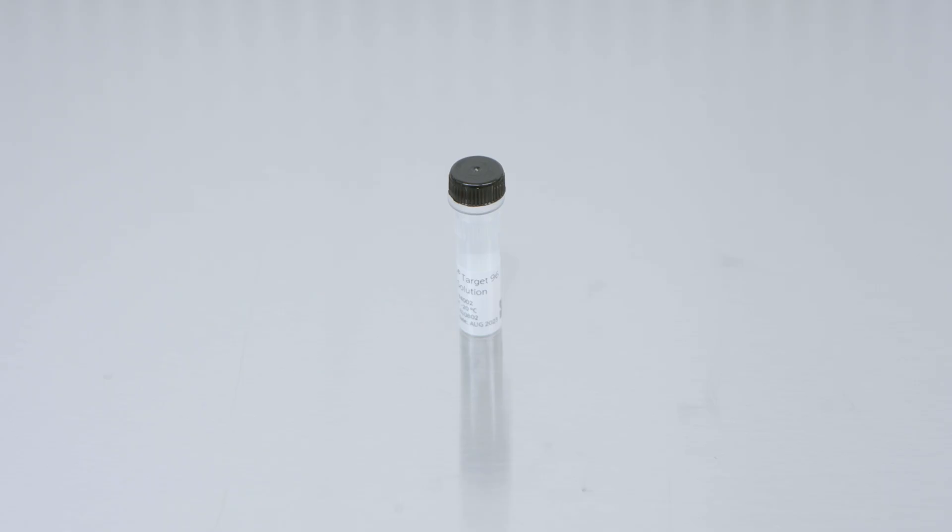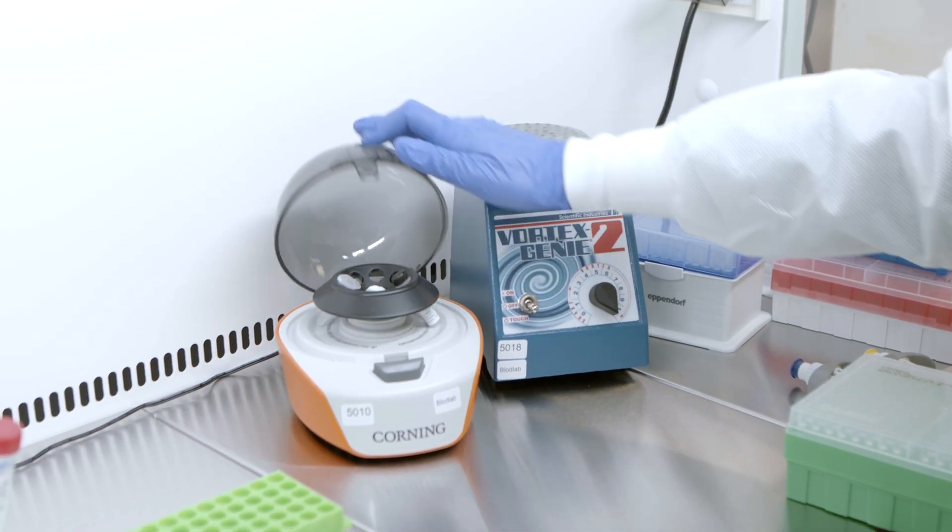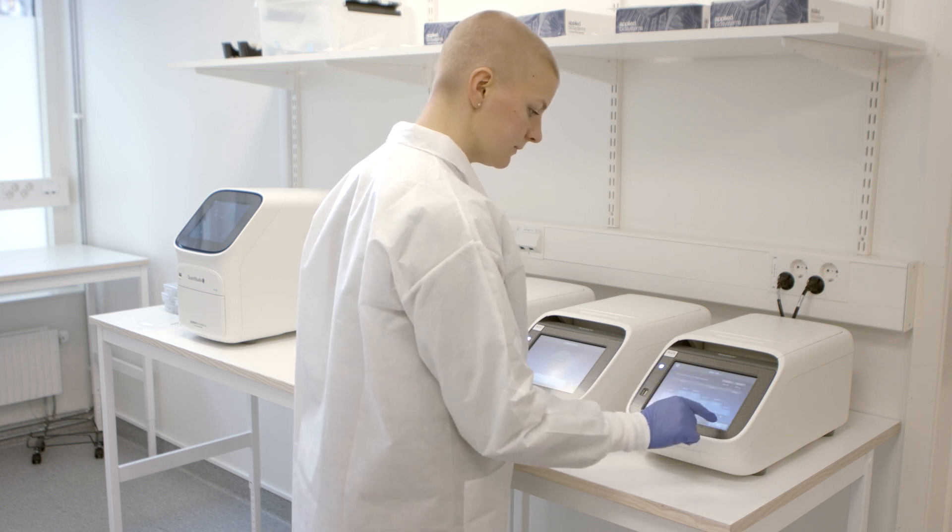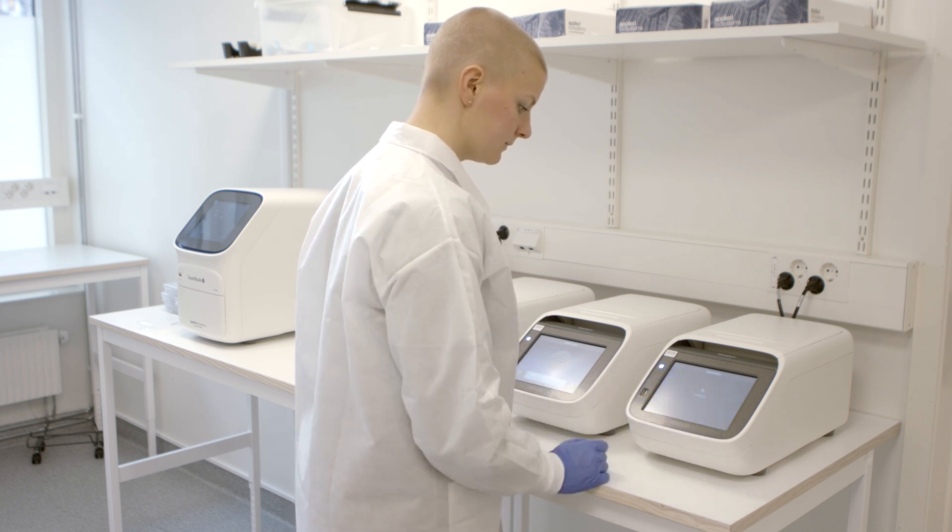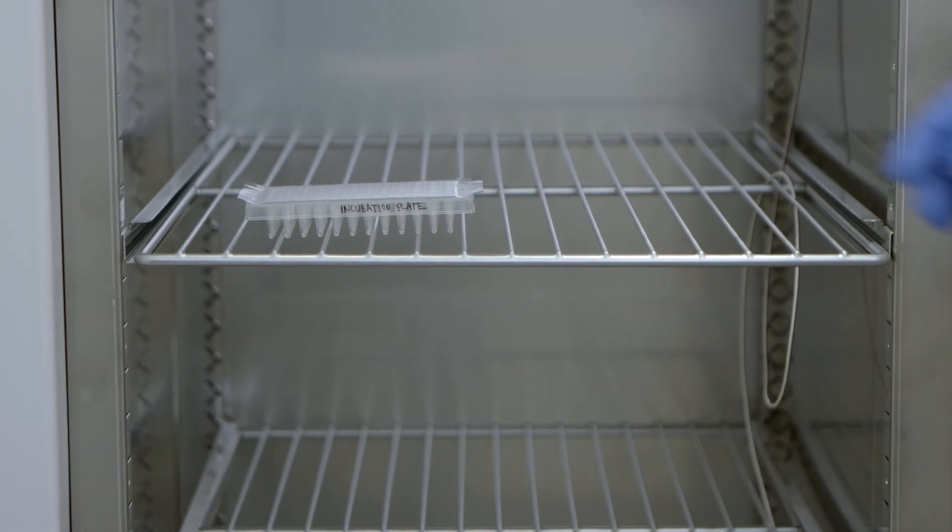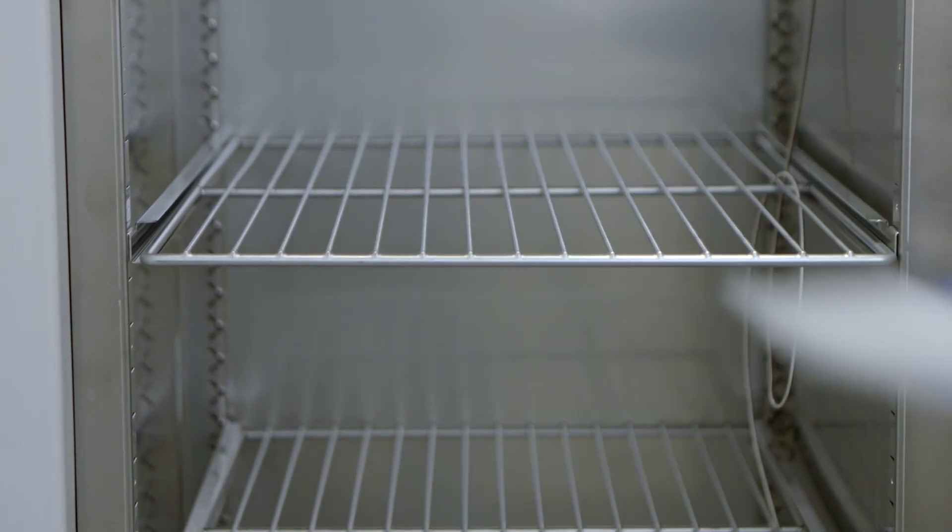Allow the PEA solution to reach room temperature and vortex and spin down before proceeding. Preheat the PCR machine by starting the extension program on your thermocycler and pause it once it reaches 50 degrees Celsius. Remove the incubation plate from the fridge and allow it to reach room temperature.